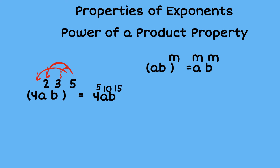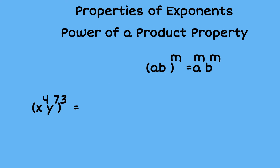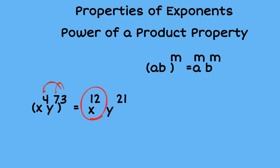You can use your calculator to raise four to the fifth power and get the coefficient, or you can just leave it as four to the fifth as the coefficient. The second example of a power of a product property would be x to the fourth times y to the seventh, all raised to the third power. We distribute that three to both exponents, and since we're raising to a power we multiply exponents, giving us x to the twelfth times y to the twenty-first.